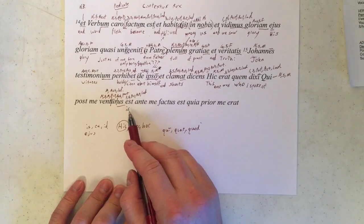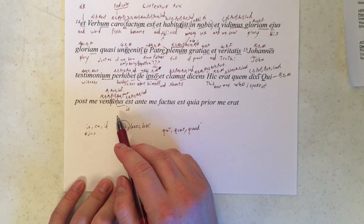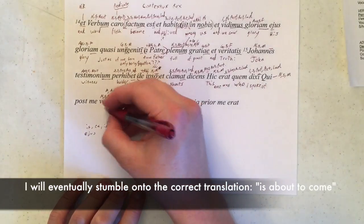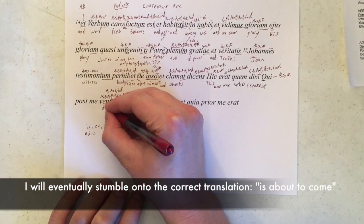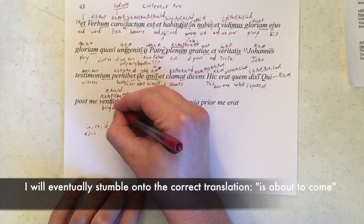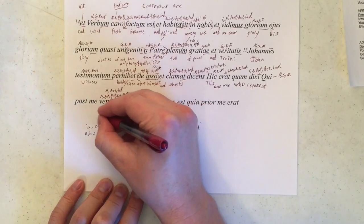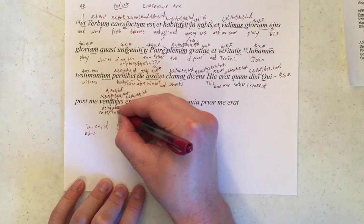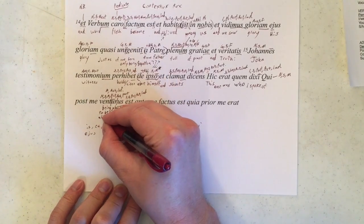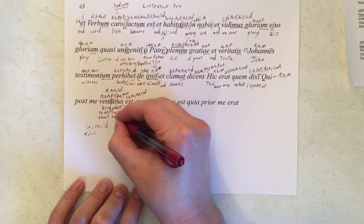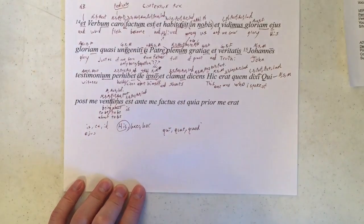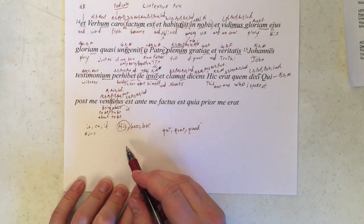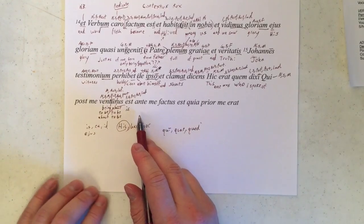And so we would translate this either as who is being about to be, or who is to be about to be. Very awkward, in English, I know. So I'm gonna write both of those in there. Being about to be, slash to be, about to be. So far so good with this weird way of saying things.